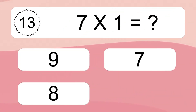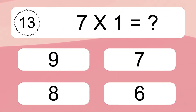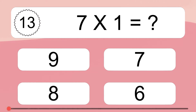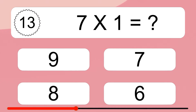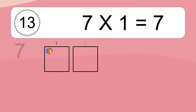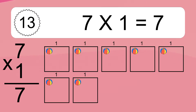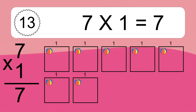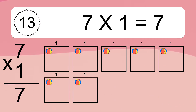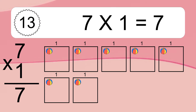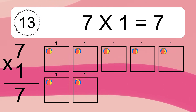Seven times one equals what? Seven times one equals seven. We have seven boxes, and each box has one colorful ball inside. If you count all the balls in all the boxes together, you will have seven times one balls. This equals seven balls.